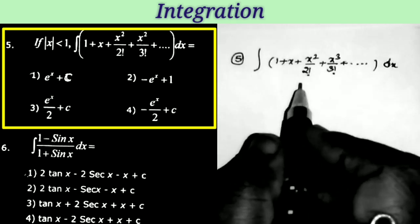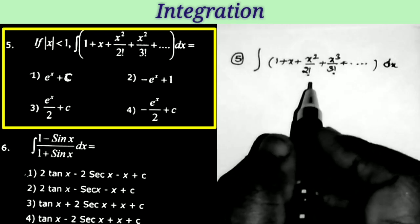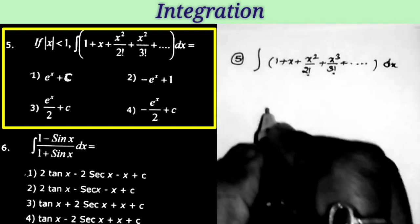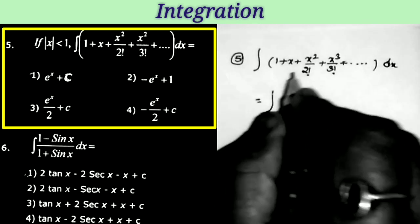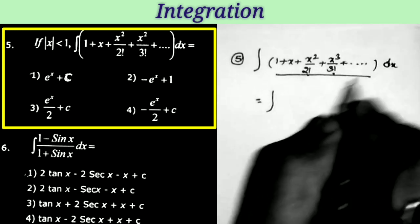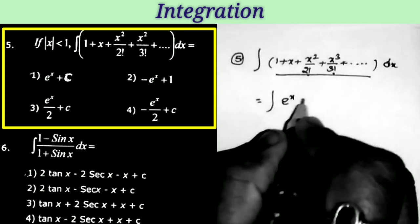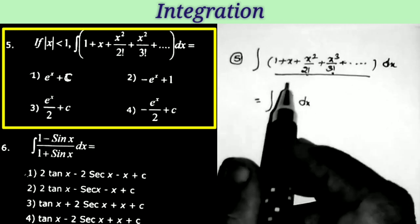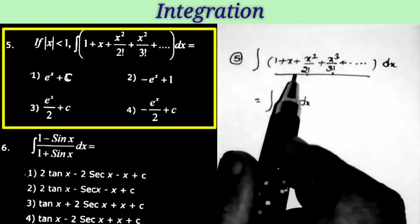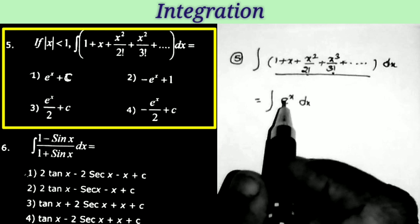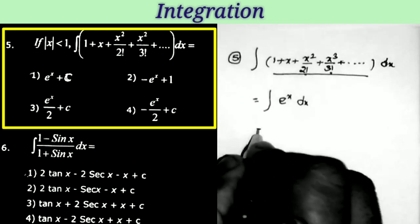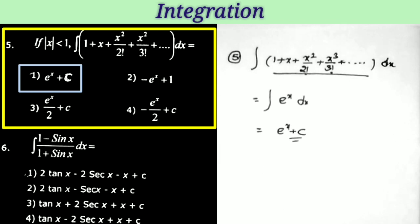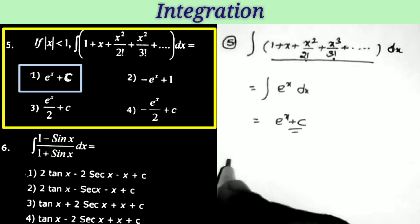Next question: integral of (1 + x + x²/2 + x³/3 + ...) dx. This total expression is the direct formula for e^x. So the given question becomes integral of e^x dx. What is the integration of e^x? e^x + c. That is the answer, and this is the first option.